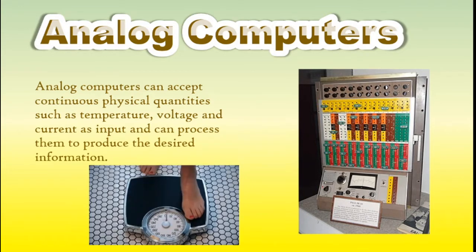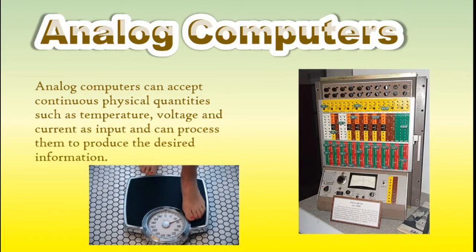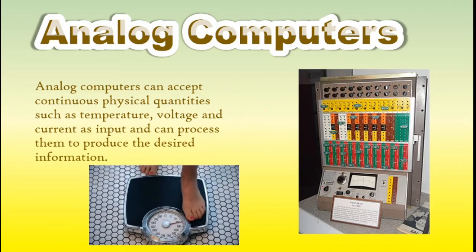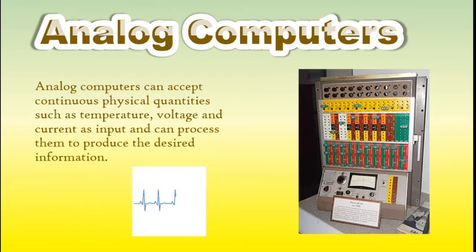These computers are ideal in situations where data can be accepted directly from a measuring instrument without having to convert it into numbers or codes. Analog computers do not require any storage capability because they measure and compare quantities in a single operation. Output from an analog computer is generally in the form of readings on a series of dials, such as the speedometer of a car, or a graph on a strip chart.